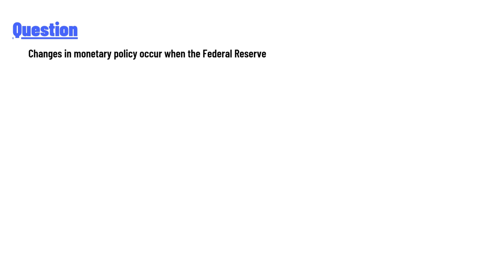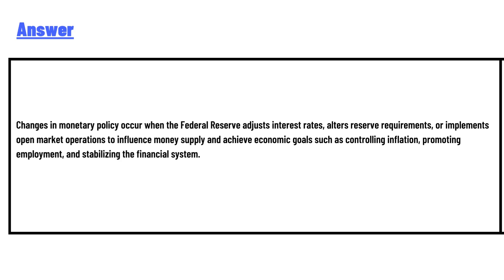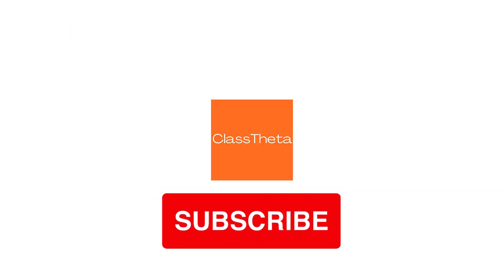Changes in monetary policy occur when the Federal Reserve adjusts interest rates, alters reserve requirements, or implements open market operations to influence money supply and achieve economic goals such as controlling inflation, promoting employment, and stabilizing the financial system. This is a great answer to the question. If you have a question you don't know, comment and I will be answering you as soon as I can.